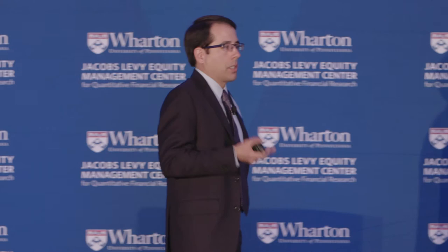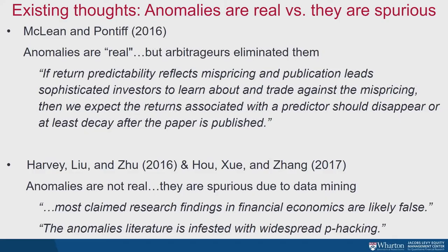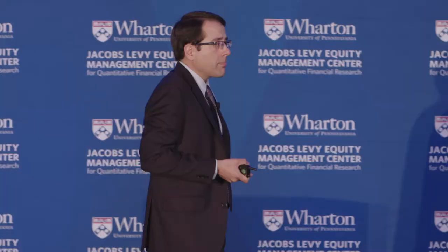If you read the academic literature, you'll come up with two opposing viewpoints. On the one hand, Jeff and David have this idea that anomalies are real things—variables that can predict future abnormal returns—but as soon as they're discovered and someone writes about them, arbitrageurs set about trying to trade on them and then they go away. In their view, asset pricing anomalies are discovered, people trade on them, and they go away.